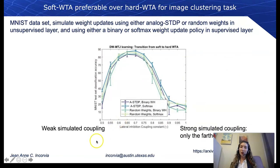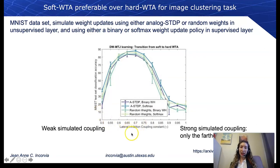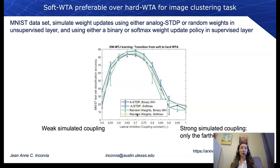Looking at the coupling strength of the lateral inhibition and its effect on classification accuracy, we find it's actually more beneficial to have a soft winner-take-all than a hard winner-take-all. We prefer that not only one neuron wins out, but that more of the active neurons can win out.